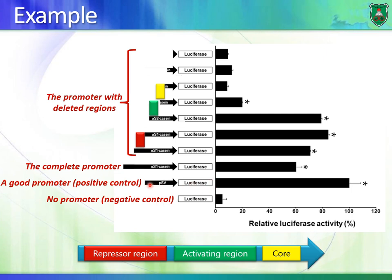We also have a positive control — a gene construct or recombinant DNA that we know should work. In any experiment, you should have a negative control that gives zero results and a positive control that gives good results. When we take the whole promoter region of the gene we want to analyze and place it upstream of the luciferase gene, we get a signal. That means the promoter is functioning, producing luciferase protein — there is transcription and translation.